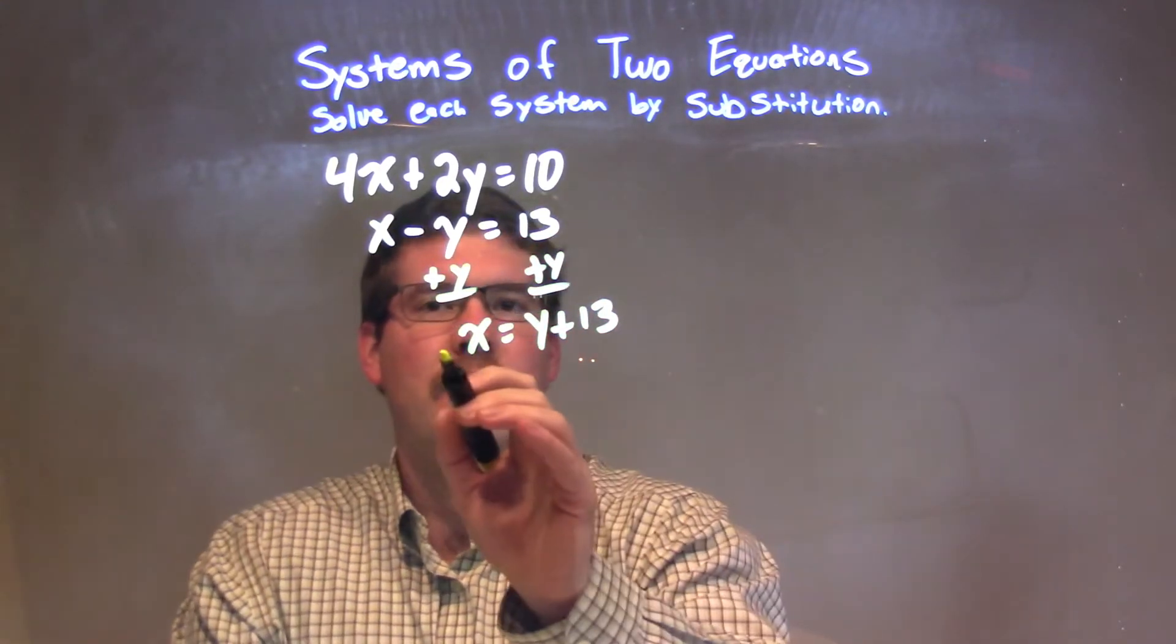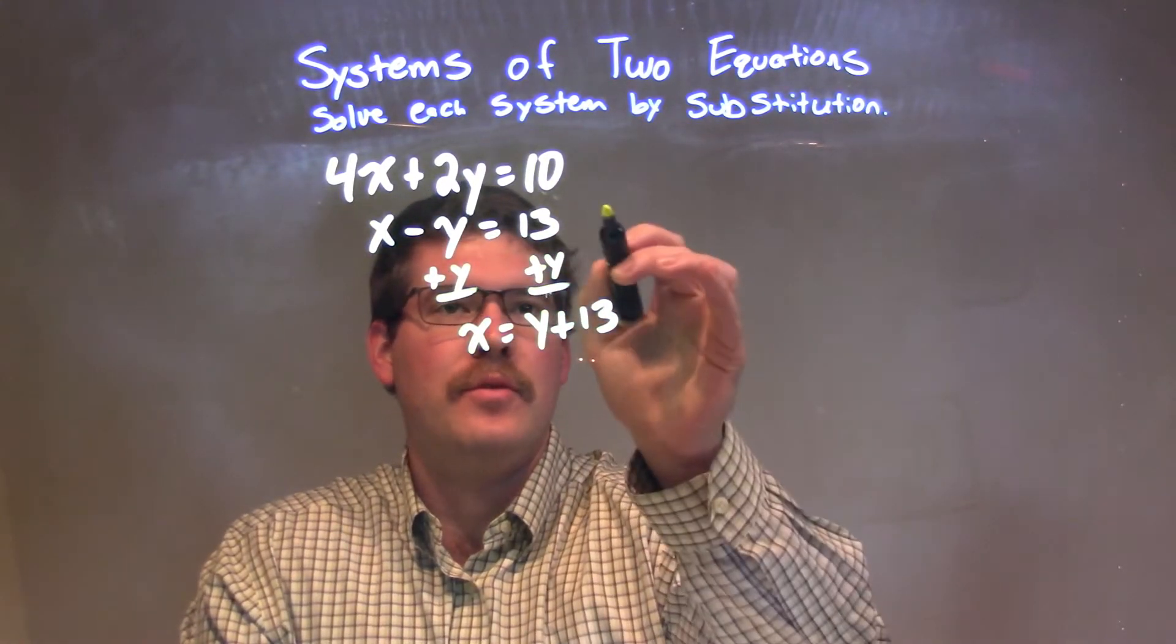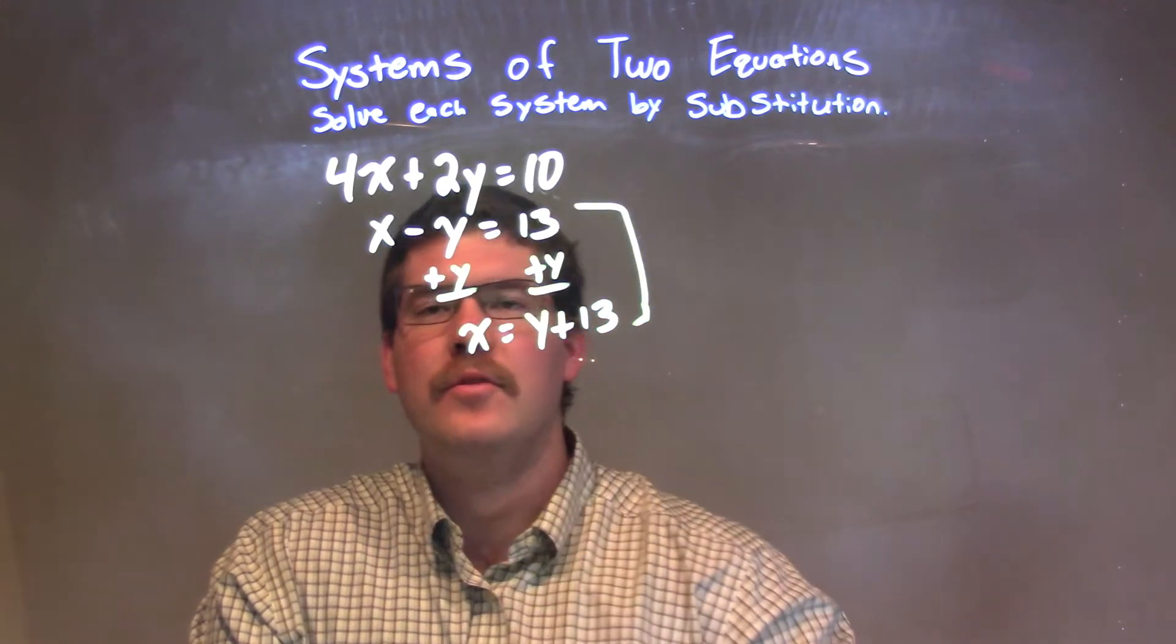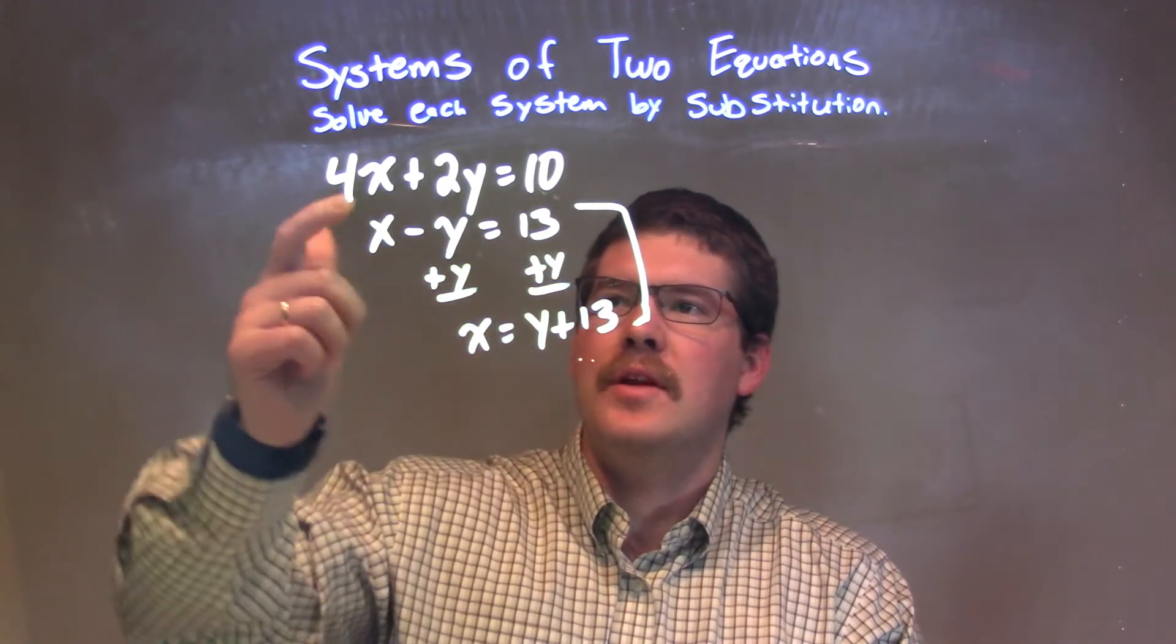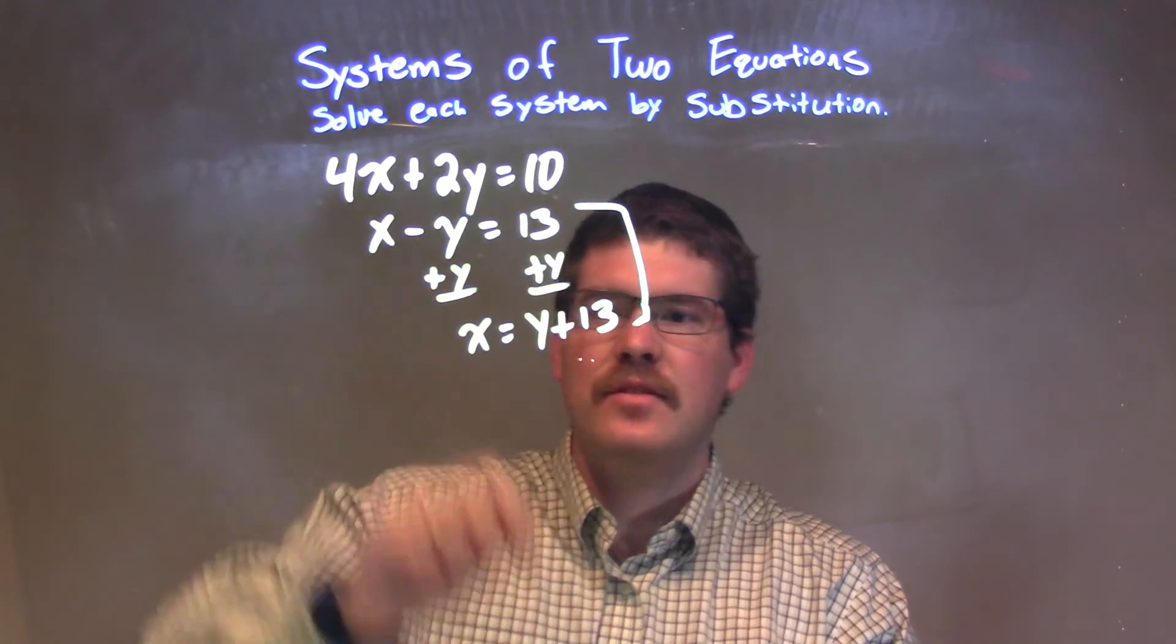So with that being said, this is still equation number two. I'm going to take that x equals y plus 13 and plug it in for the x in this equation.